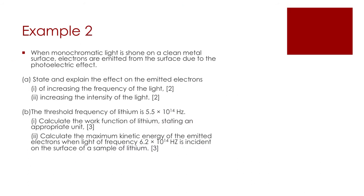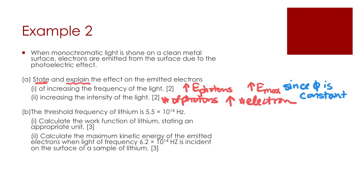Let's go through another example. When monochromatic light, i.e. light of only one wavelength or one frequency, is shone on a clean metal surface, electrons are emitted from the surface due to the photoelectric effect. State and explain. So tell me the effect, and don't forget to tell me why. The effect on the emitted electrons. So increasing the frequency of the light. Well, if I increase the frequency, I will increase the energy of the photons. That means there will be more energy to be given to the electrons, and that's what we're supposed to be talking about, not just photons. That means the energy maximum of the kinetic energy of the electrons is going to increase as well. Second part, increasing the intensity of the light. Well, if I increase the intensity, I increase the number of photons. What is that going to do? That's going to increase the number of electrons, but not their kinetic energy. Photocurrent will increase.